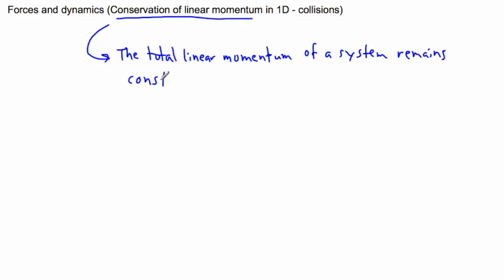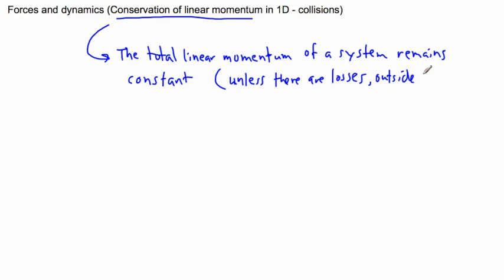The total linear momentum remains the same unless there are losses in energy or outside resultant forces. We're going to assume that there aren't any of these — no energy loss due to friction, nothing due to sound or heat, and no outside resultant forces. So in this simplified situation, the total linear momentum before equals the total linear momentum after.